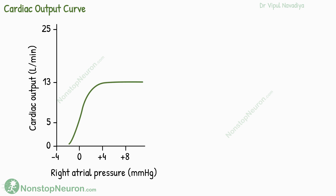Here we will focus on the curve. This curve is for a normal human heart functioning without any kind of nervous influence. We can see that with an increase in right atrial pressure, initially the cardiac output increases. But eventually it reaches a plateau and there is no further increase in cardiac output even with the increase in pressure. For a normal heart, this maximum capacity is reached at about 13 liters per minute.